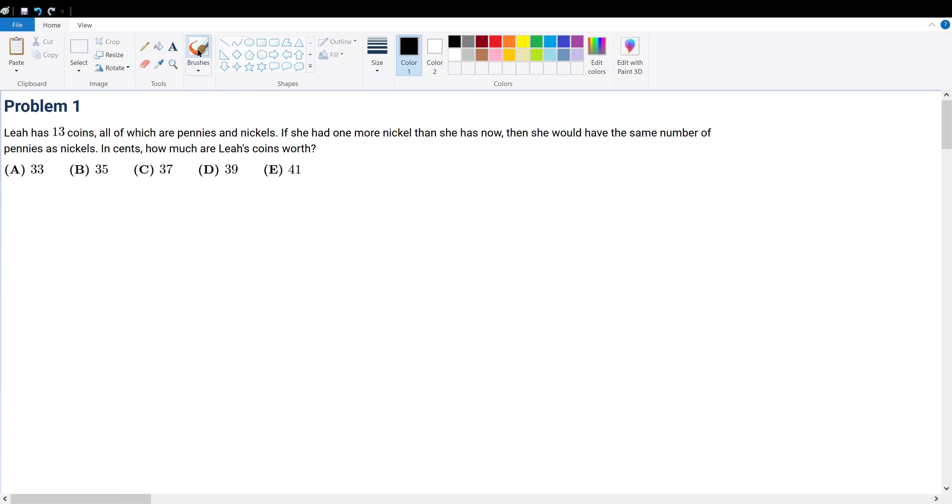Problem one: Leia has 13 coins all of which are pennies and nickels. So let's assume that she has X pennies. Let's assume that she has Y nickels.